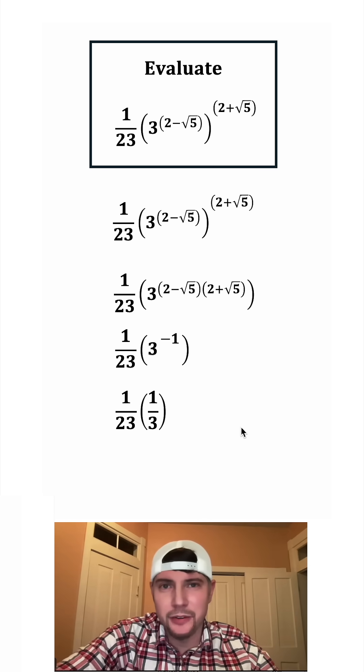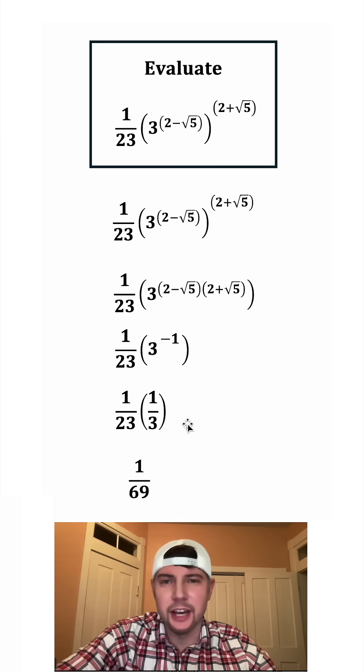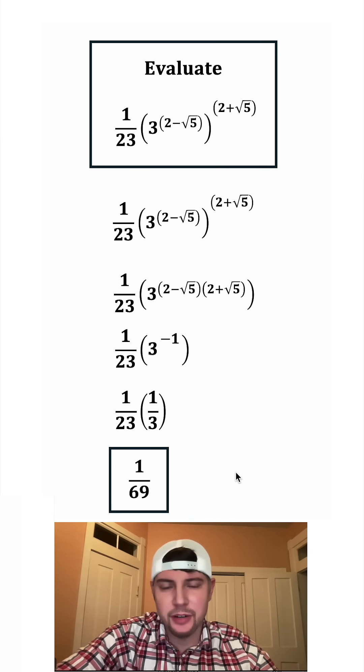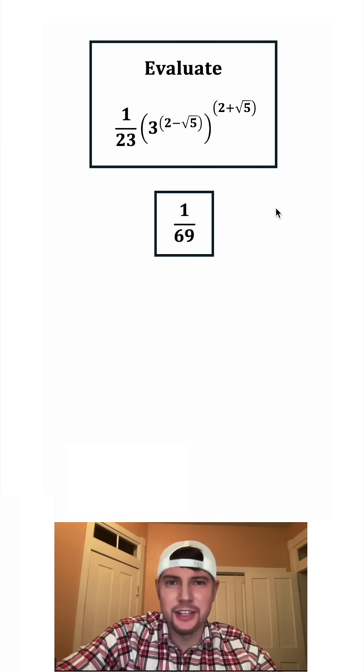And then for the last step, we're going to multiply the fractions. 1 over 23 times 1 over 3 is 1 over 69. 1 over nice. This is the answer to our question, let's put a box around it. How exciting. So all of this simplified to 1 over 69.